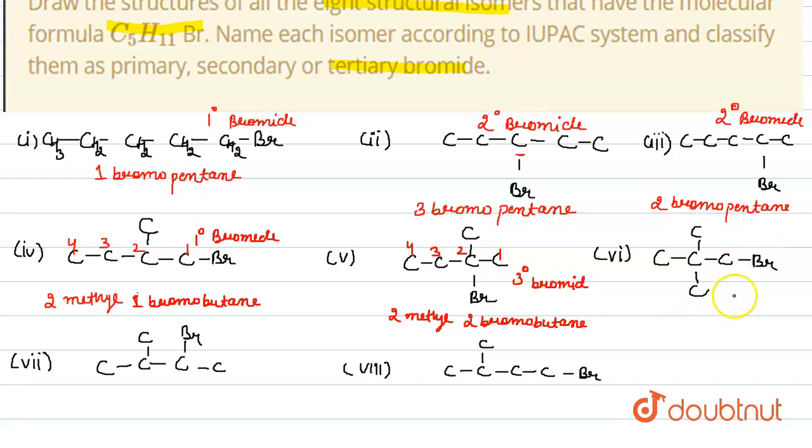Next is here this bromine is primary bromide, and its name will be 2,2-dimethyl-1-bromo-propane.